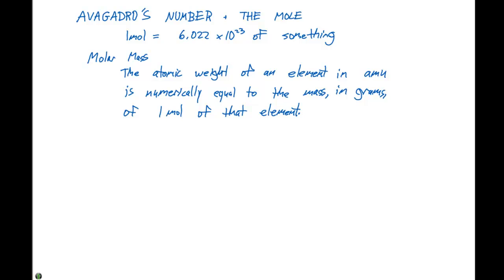What we can say is this: If I have one atom of chlorine, we know its atomic weight or the mass of one of those atoms is 35.5 amu. What this definition tells us is if we have one mole of chlorine, it's going to be numerically equal to this mass in grams. So one mole of chlorine is going to be 35.5 grams.